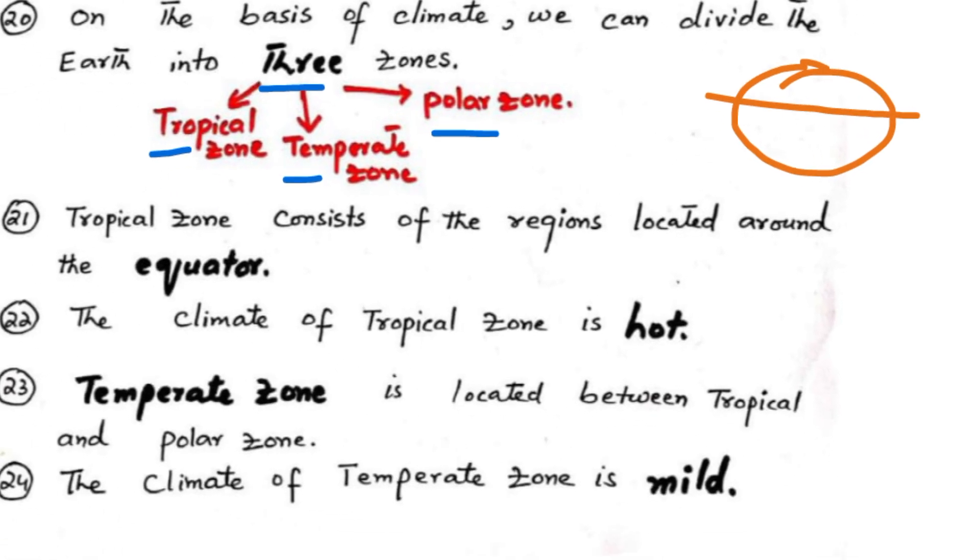Tropical zone consists of the regions located around the equator. The climate of the tropical region is hot.